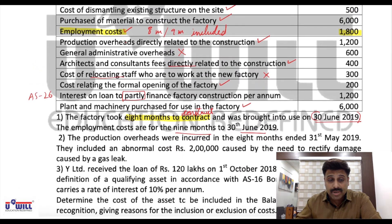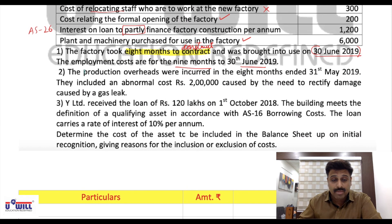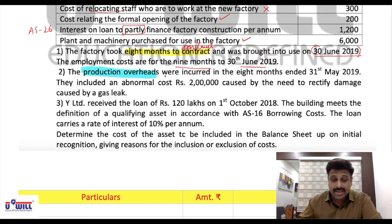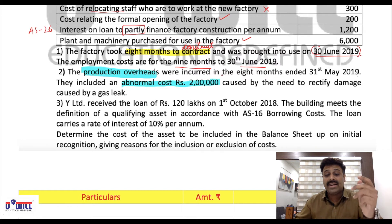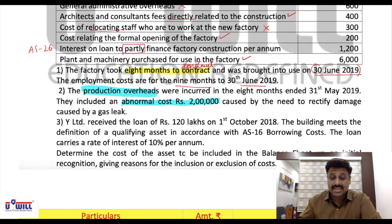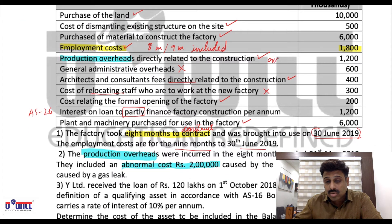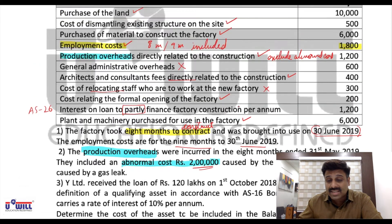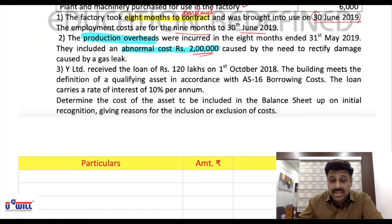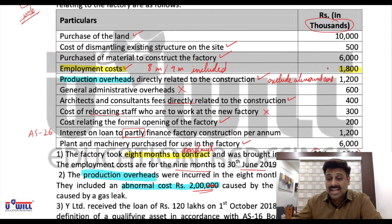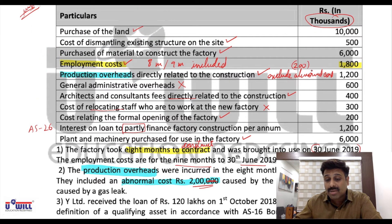Regarding production overheads — these were incurred over 8 months ending 31st May 2019, but they included an abnormal cost of 2 lakhs to be excluded. We discussed yesterday that abnormal costs are losses that must be directly debited to the P&L account. As figures are given in thousands, 2 lakhs equals 200 thousands — that amount is to be excluded from production overheads.